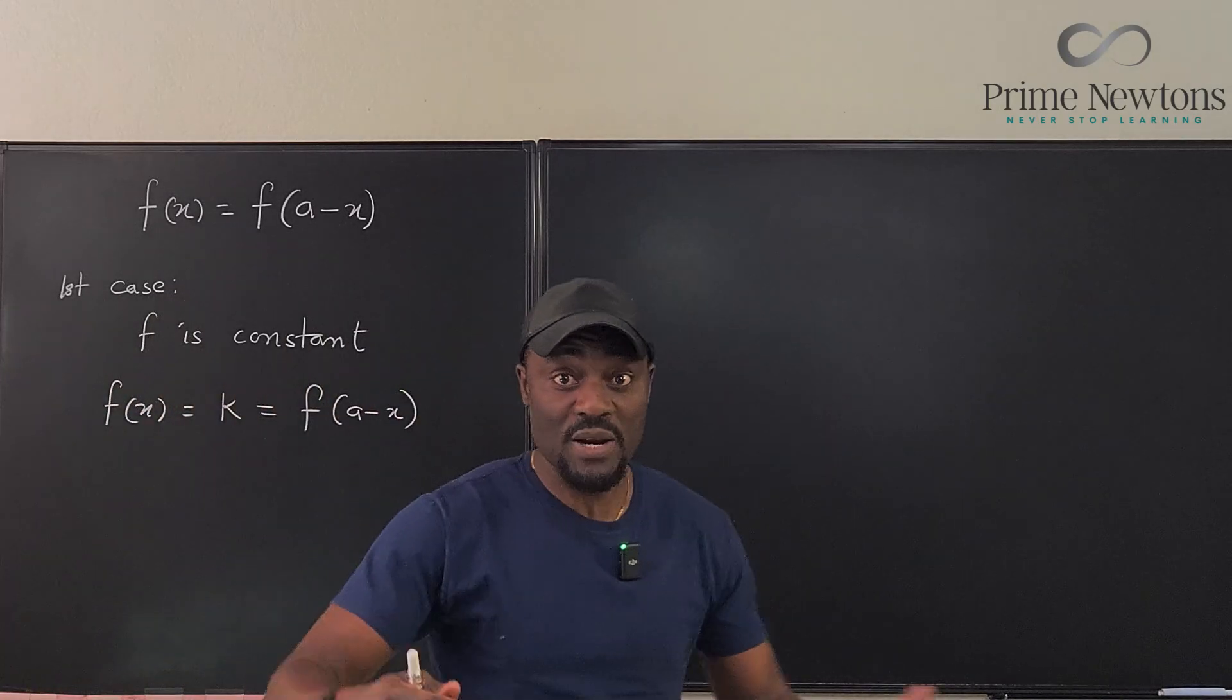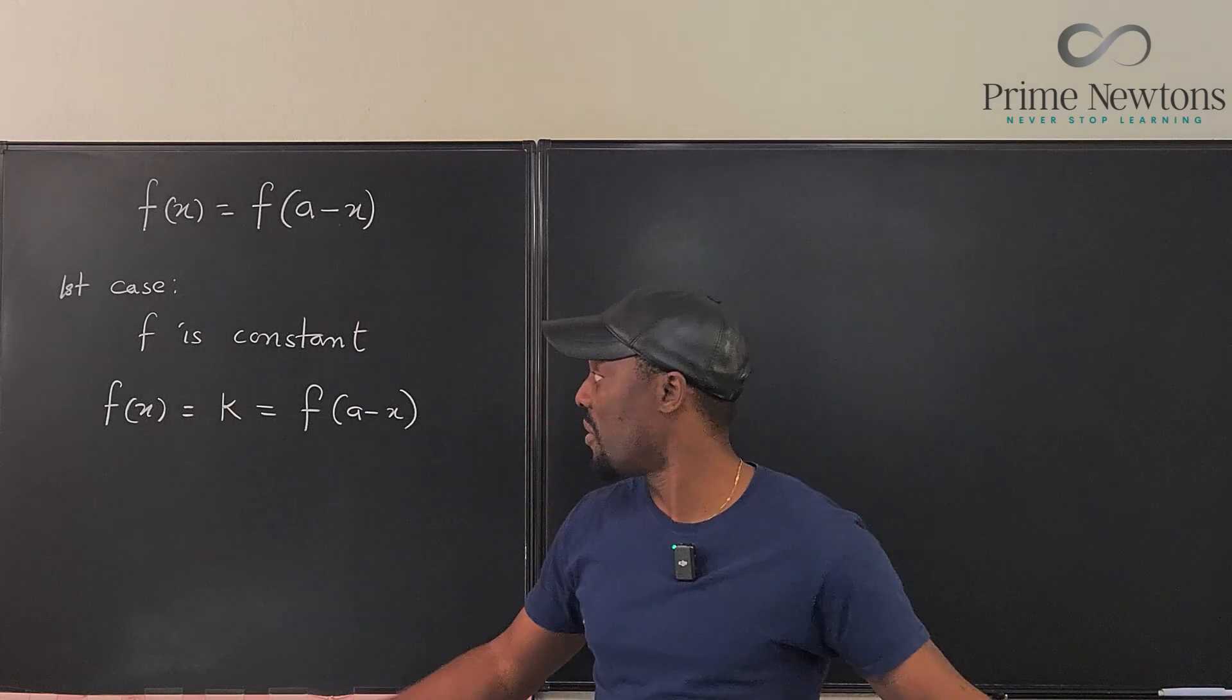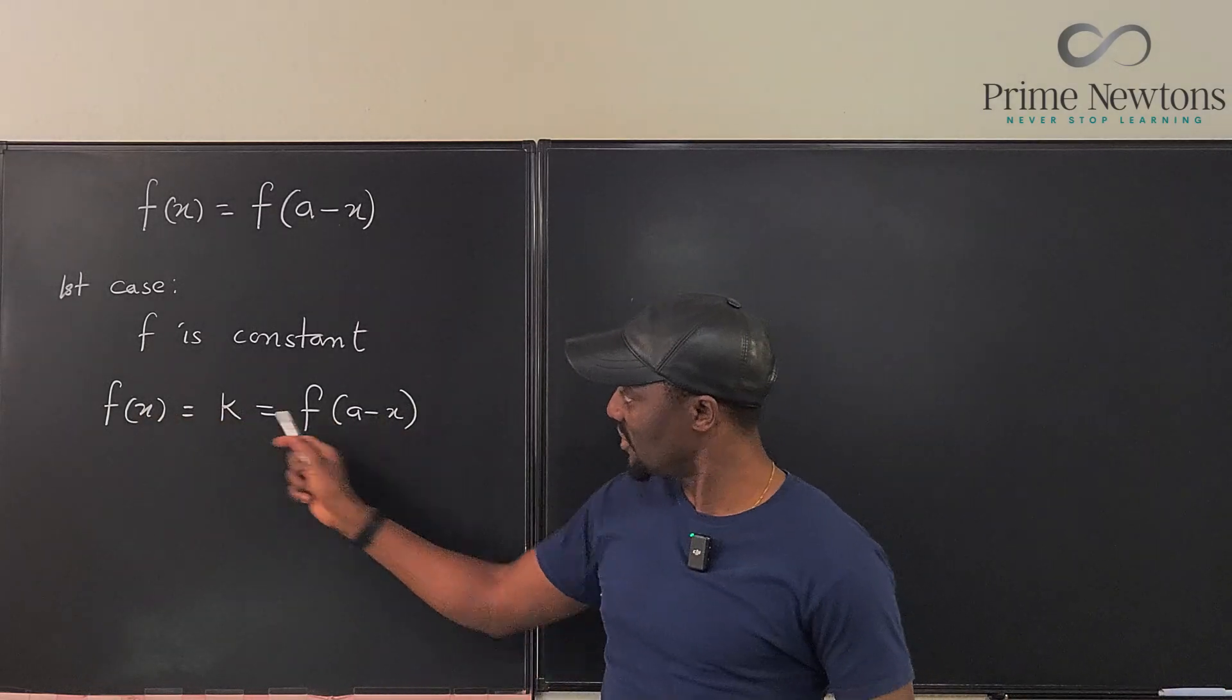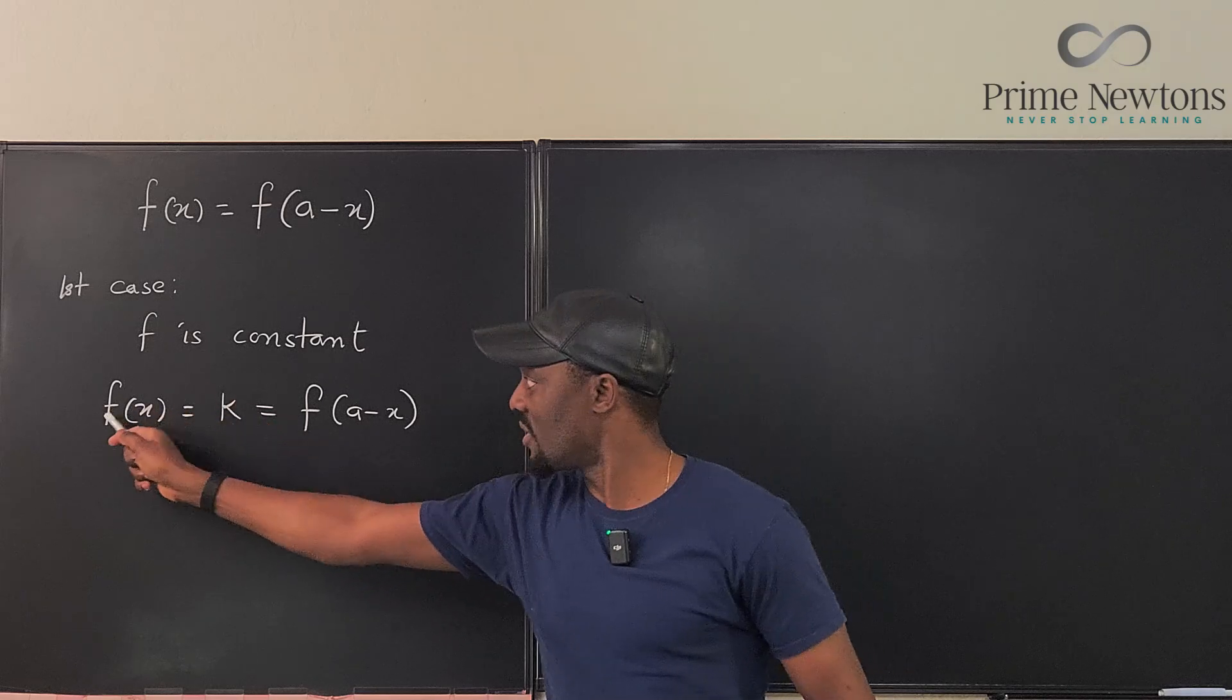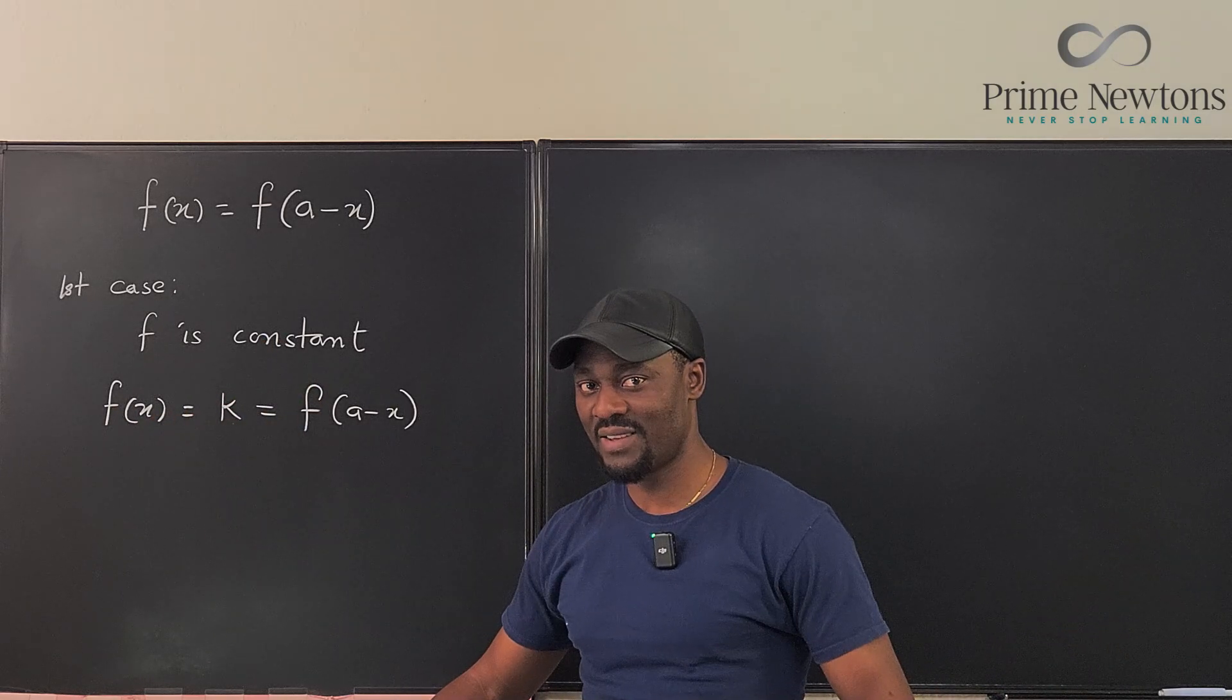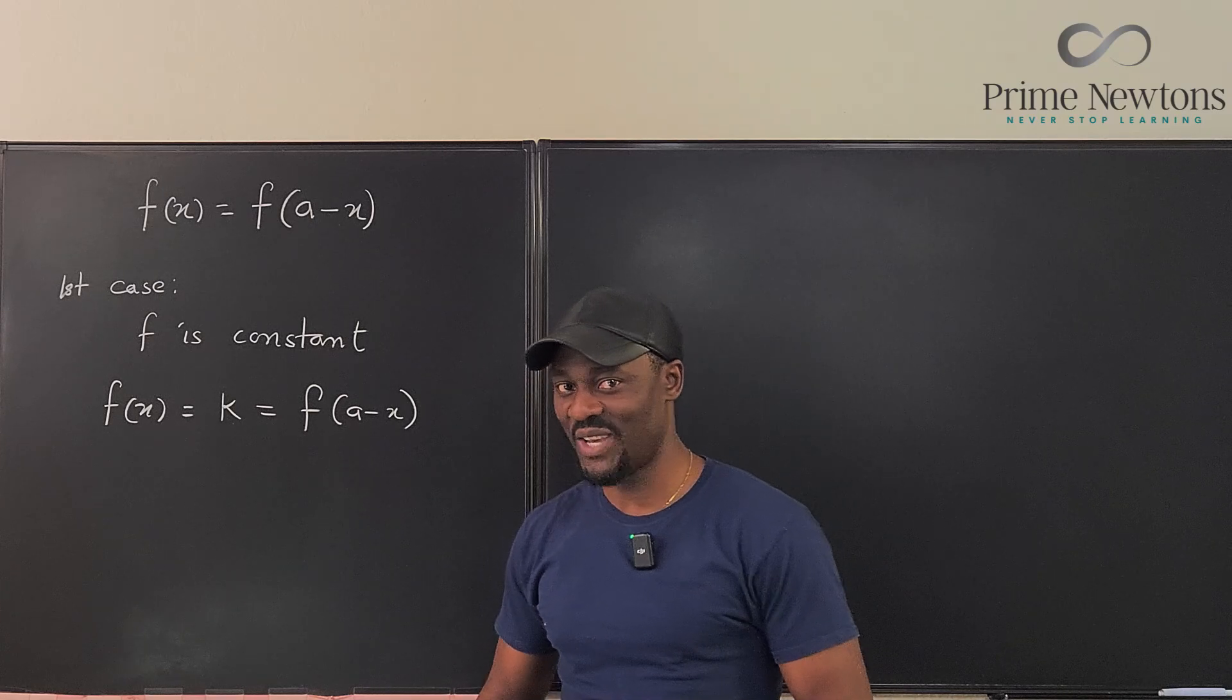Say f(x) is zero. No matter what you plug in, you always get zero, then f(x) equals f(a-x) because this is going to give us k and this is going to give us k. It doesn't matter. That's the first case, the case of a constant function.